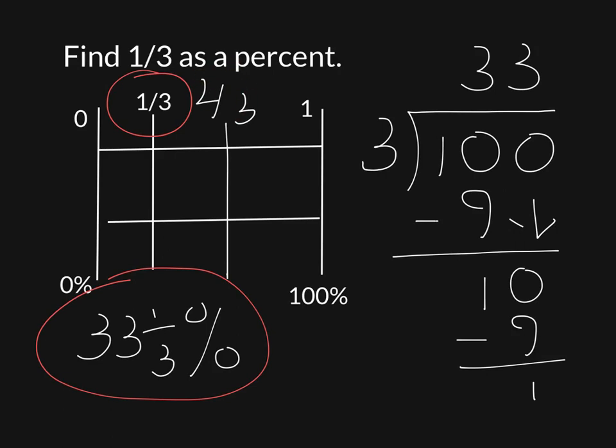Well, if I'm interested in two-thirds, right there, then what I need to do is I need to take what I have right here and double it. So if I do that, what I get, I'm going to write it over here, is 66 and two-thirds percent.